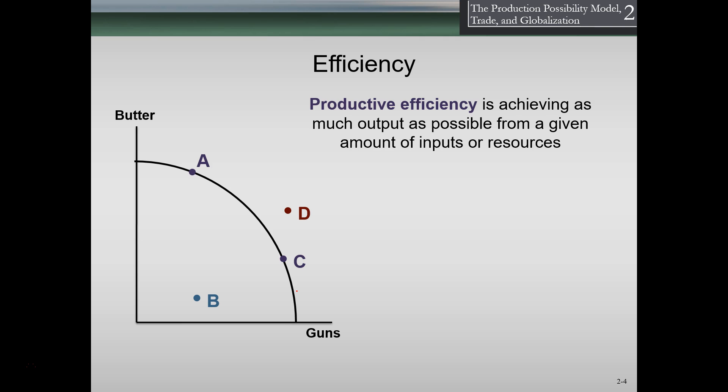Looking at efficiency in terms of our production possibility frontier — anywhere on this curve is what we could do and represents an efficient point. Any combination on this curve is our production possibility frontier, and anywhere on the curve is efficient. Both points A and C are efficient. Efficiency simply means we're taking all available resources and fully utilizing them to produce at whatever point we decide. It doesn't tell us what point is optimal — that's a separate discussion.